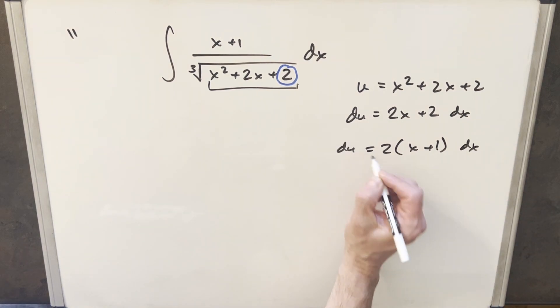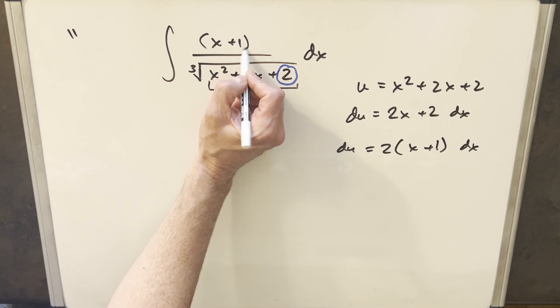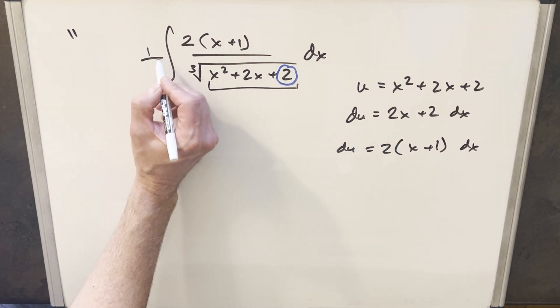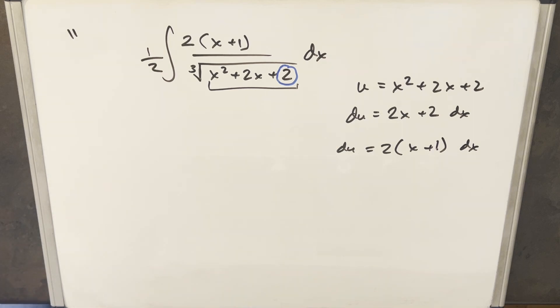But then just notice I can create this du right here. We'll just put parentheses and multiply this by 2. But then also multiply by half, so we're not changing it. And then we'll just go ahead with the substitution. So we're going to have our 1 half in front. This whole thing is going to be du here.